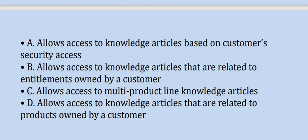Option A: Allows access to knowledge articles based on customer security access. Option B: Allows access to knowledge articles that are related to entitlements owned by a customer. Option C: Allows access to multi-product line knowledge articles. Option D: Allows access to knowledge articles that are related to products owned by a customer.